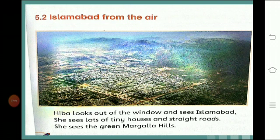Now look at this picture carefully — this is the aerial view of the city. Aerial view means the view from the air. Hiba looks out of the window and sees Islamabad. She sees lots of tiny houses and straight roads, and she sees the green Margala Hills. The Margala Hills are the hills around the city of Islamabad.